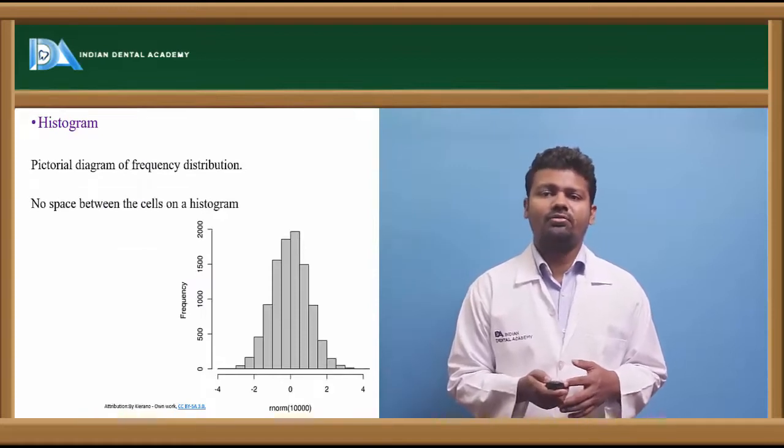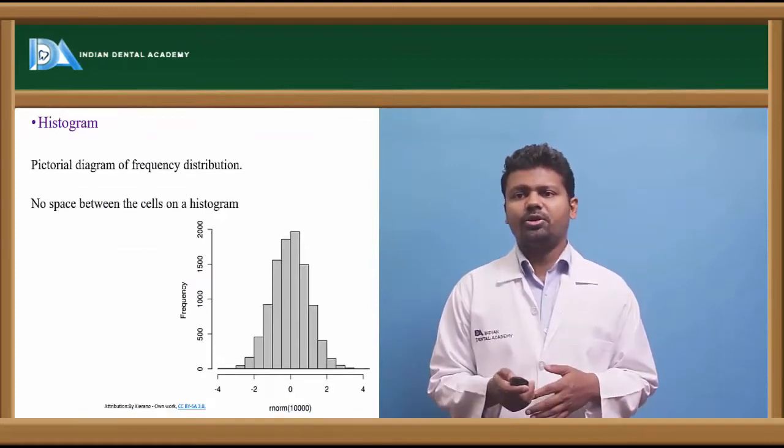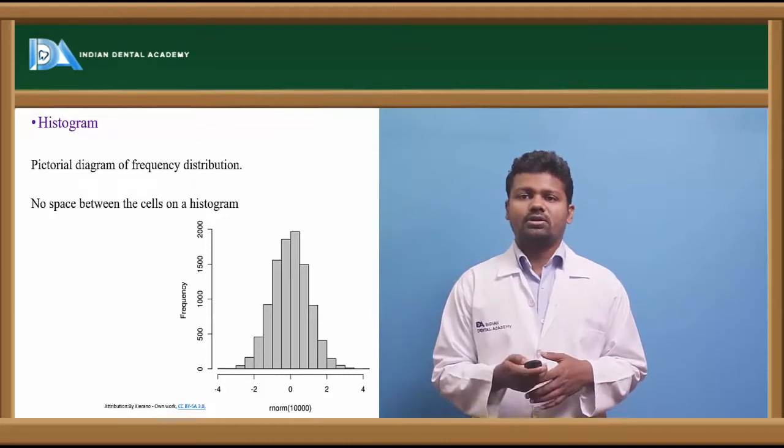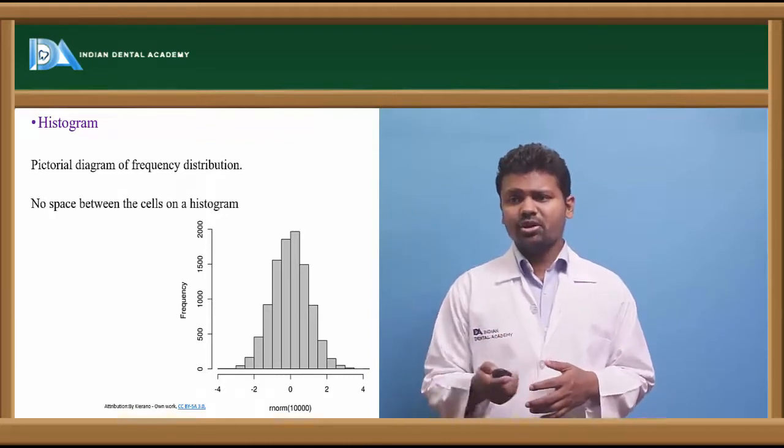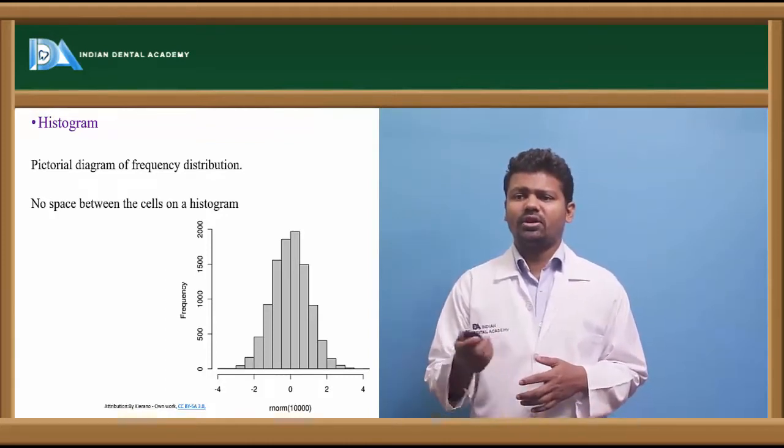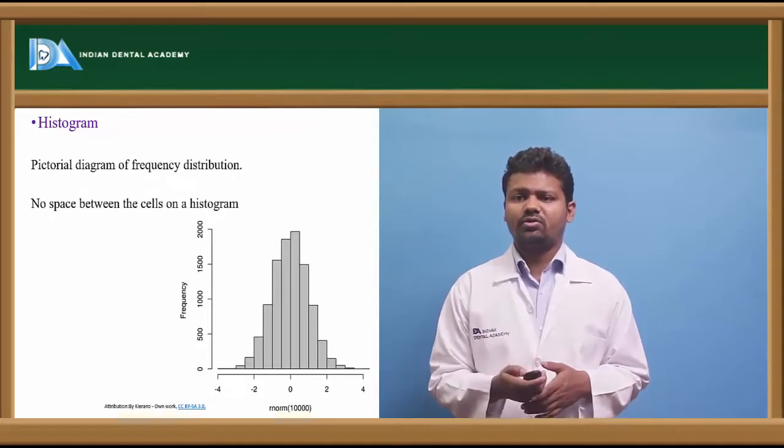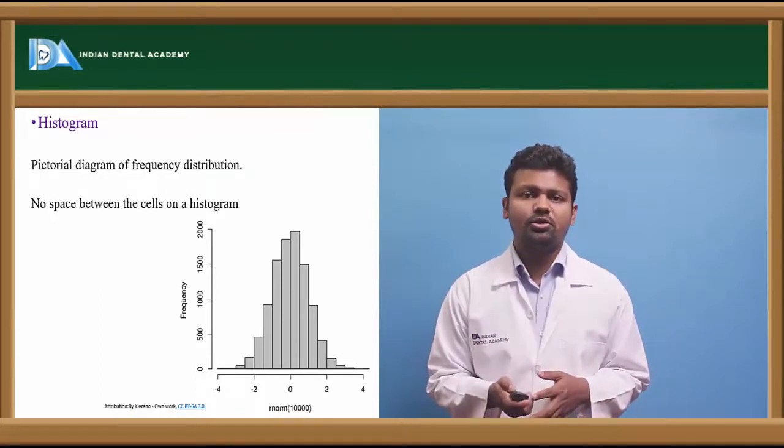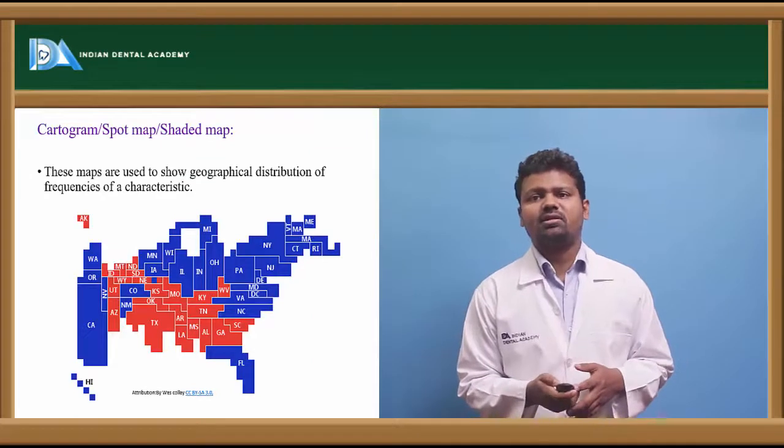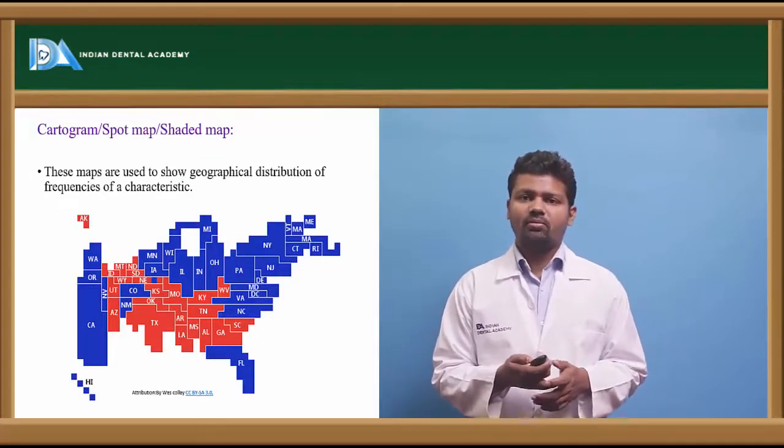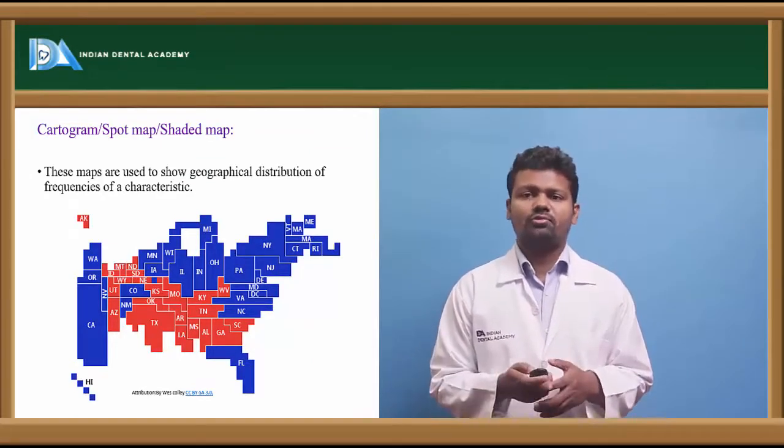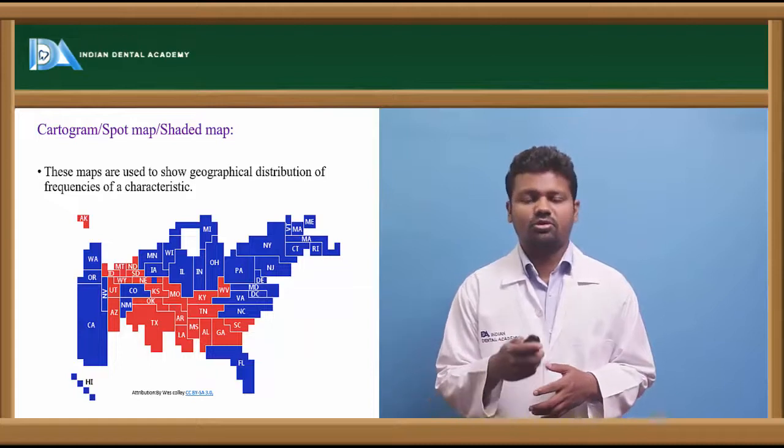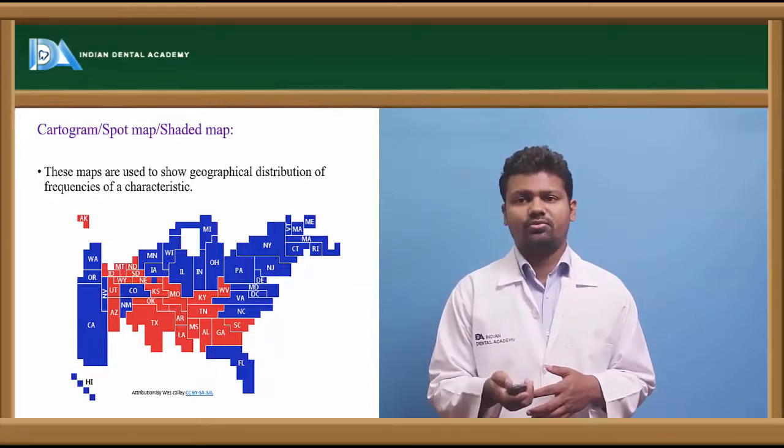A histogram is a pictorial diagram of frequency distribution with no space between cells. It shows caries prevalence according to age or frequency. The cartogram, or spot map or shaded map, is used to show the geographical distribution of frequency.